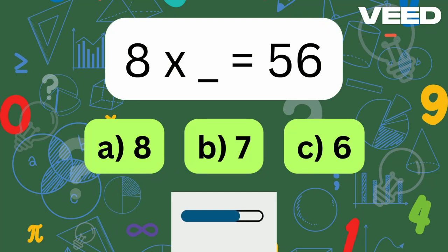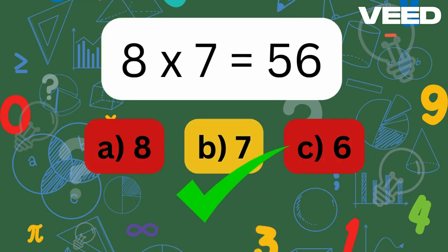8 times what is 56? 8 times 7 is equal to 56.